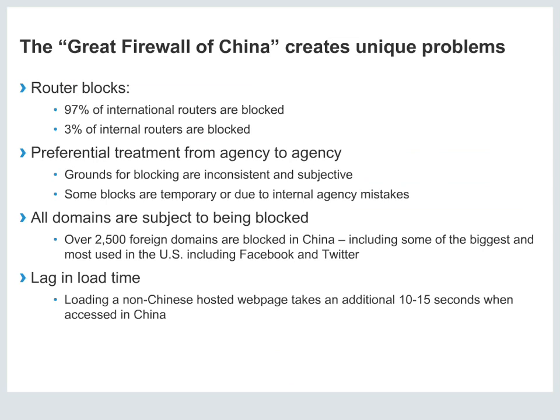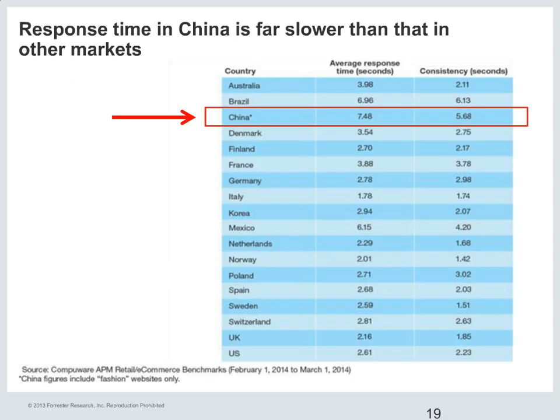One of the most important challenges — especially if you're offering transactional capability through your website in China — is the lag in load time. It takes an additional 10 to 15 seconds when accessing a website in China, and estimates put the cart abandonment rate at around 30 to 40%. To illustrate how slow this is: the average response time takes over 7 seconds in China, compared to another BRIC market like Brazil which doesn't even reach 7 seconds, and the U.S. where you're still under 3 seconds.